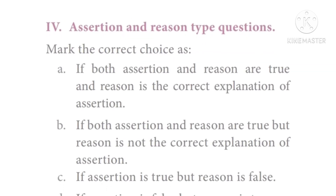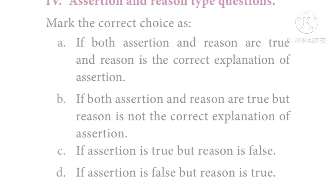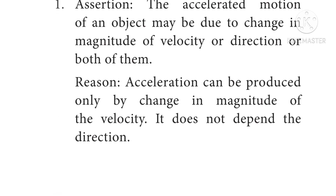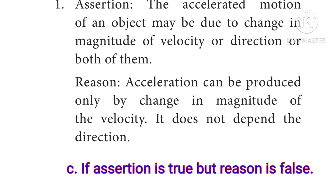Assertion and reason type questions. Question 1 — Assertion: The accelerated motion of an object may be due to change in magnitude of velocity or direction or both of them. Reason: Acceleration can be produced only by change in magnitude of velocity; it does not depend on direction. The correct answer is Option C — assertion is true, but reason is false.